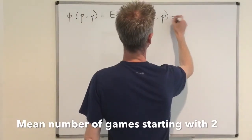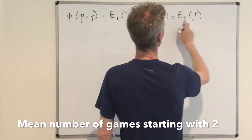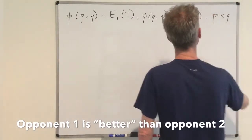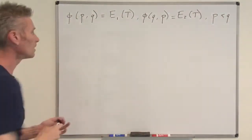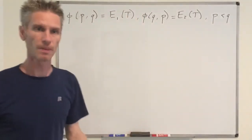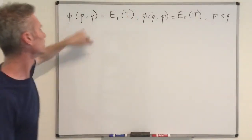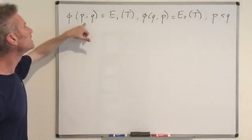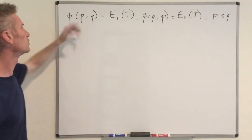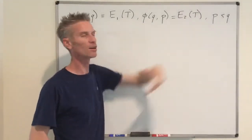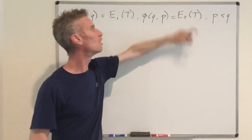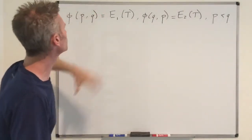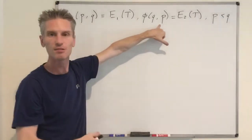Then we are also going to introduce another function φ(Q,P), which is the same expected number of games she will have to play but when starting with opponent 2. So this is going to be the expected value of T starting with opponent 2. And I remind you that P is less than Q. Now the question is, given that we have P less than Q, we want to compare those two quantities and see which one is the largest.